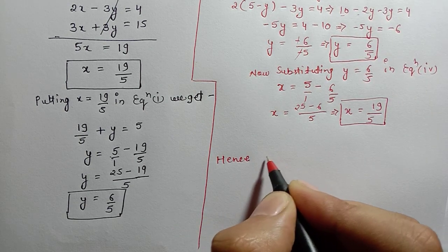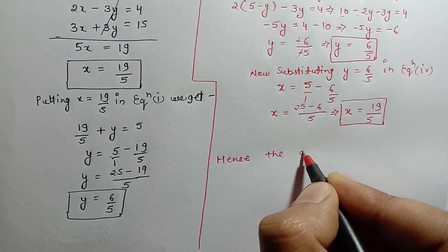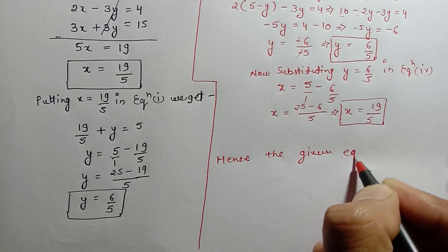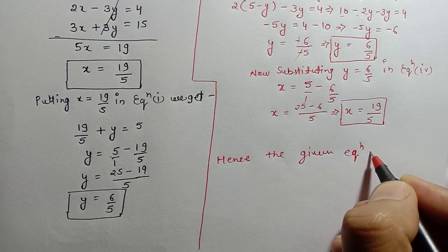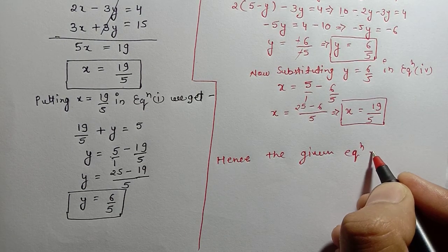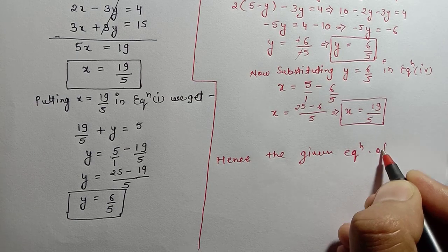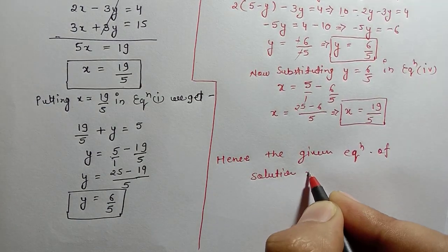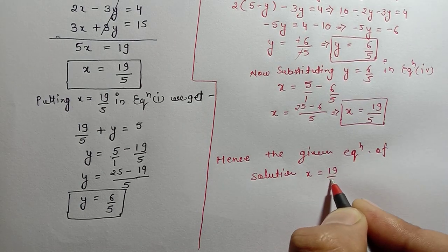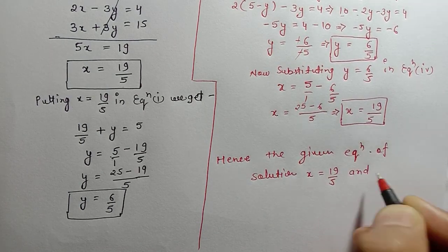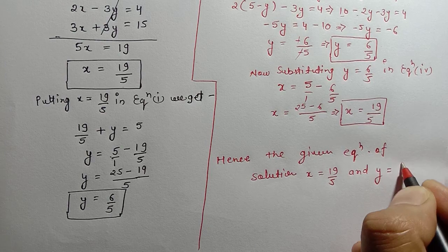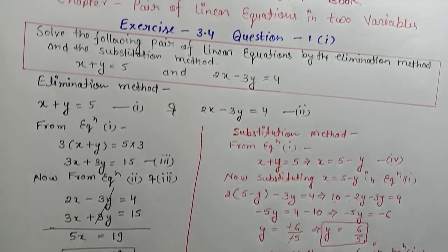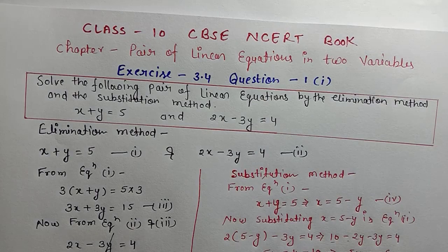Hence the solution of the given pair of equations is x equals 19 by 5 and y equals 6 by 5. I hope Exercise 3.4 Question 1 is clear. If you have any doubt, please leave a comment in the comment box.